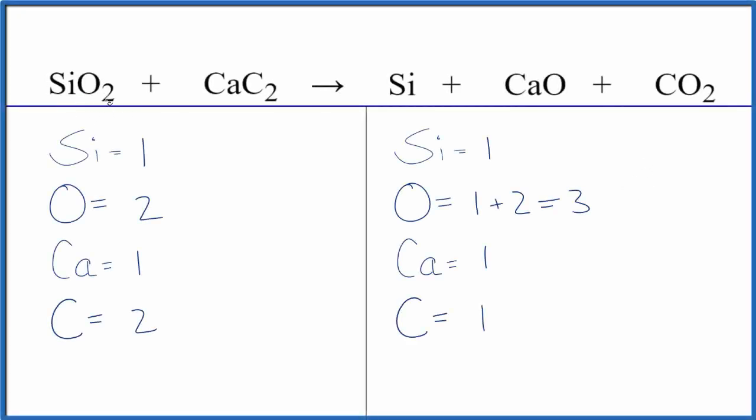In this video we'll balance the chemical equation SiO2 plus CaC2, silicon dioxide plus calcium carbide. It's a bit of a challenging equation to balance because we have an oxygen here and here, so it gets tricky when we have them spread out.